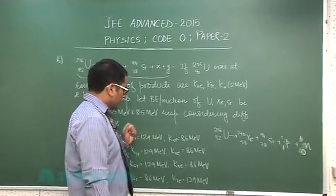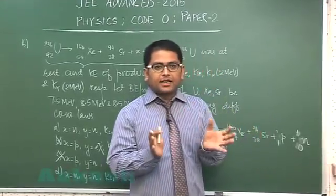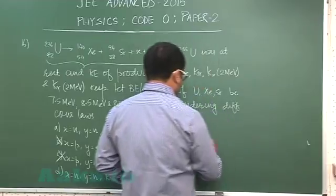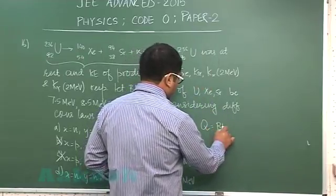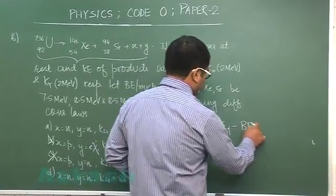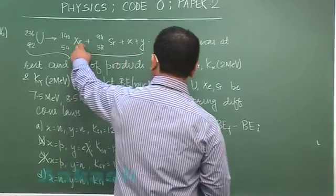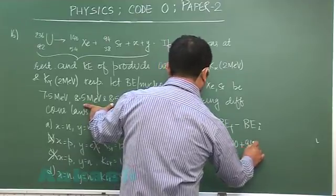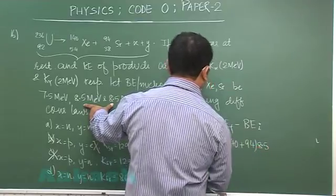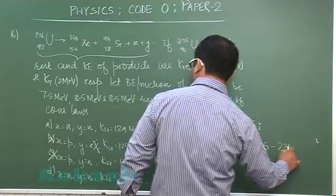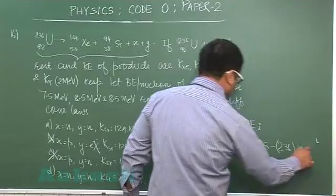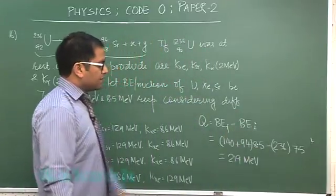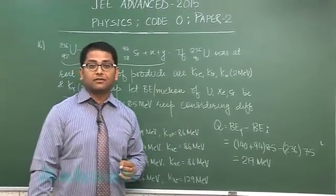Now we check whether the energy criterion is satisfied by calculating the Q-value from binding energies. The Q-value released equals final binding energy minus initial binding energy. The final binding energy is (140 + 94) × 8.5 MeV, and the initial binding energy is 236 × 7.5 MeV. Calculating these gives a Q-value of approximately 219 MeV, and most of this goes into kinetic energy of the daughter nuclei.